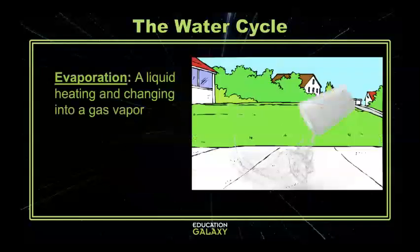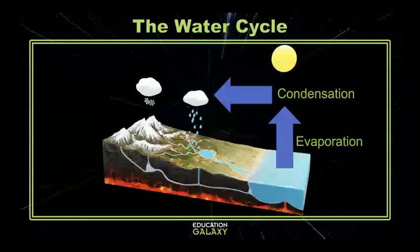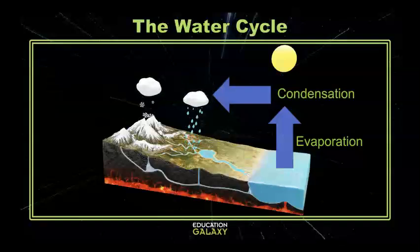Evaporation is what happens when you spill water on the sidewalk and it disappears. When the ocean water evaporates, it moves upwards. Once the water vapors get high enough into the sky, they start to cool off and condensate.